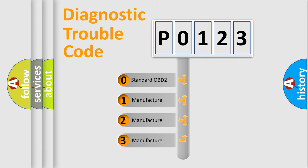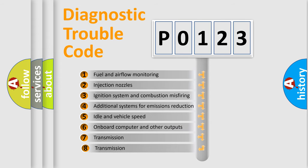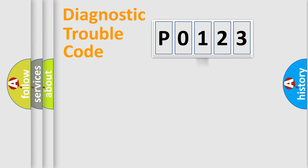If the second character is expressed as zero, it is a standardized error. In the case of numbers 1, 2, or 3, it is a more prestigious expression of the car-specific error. The third character specifies a subset of errors. The distribution shown is valid only for the standardized DTC code.